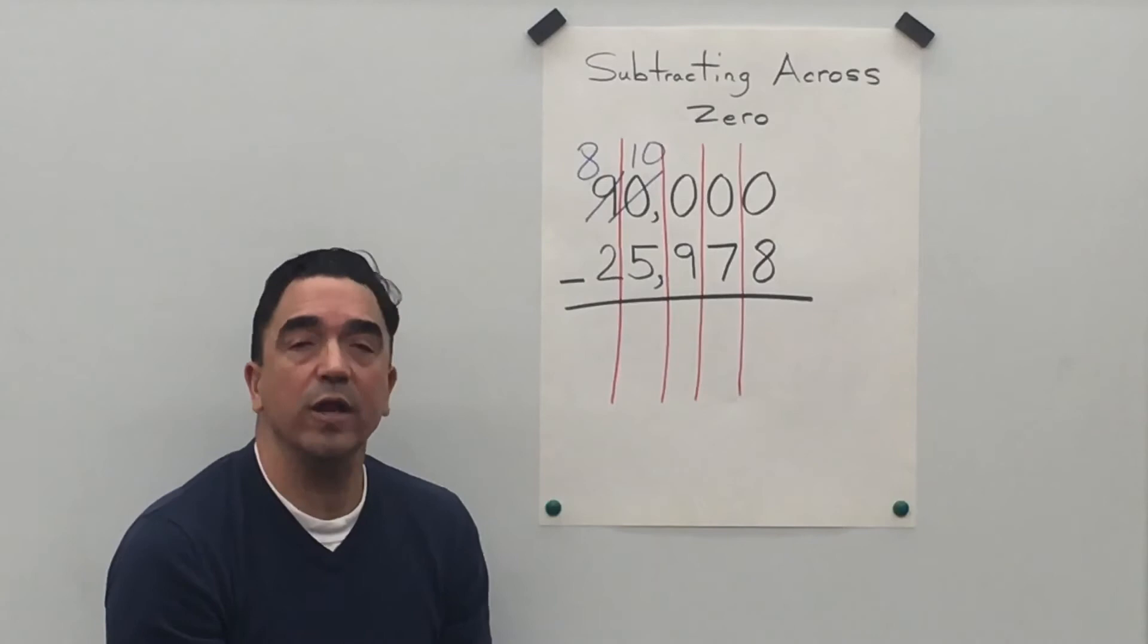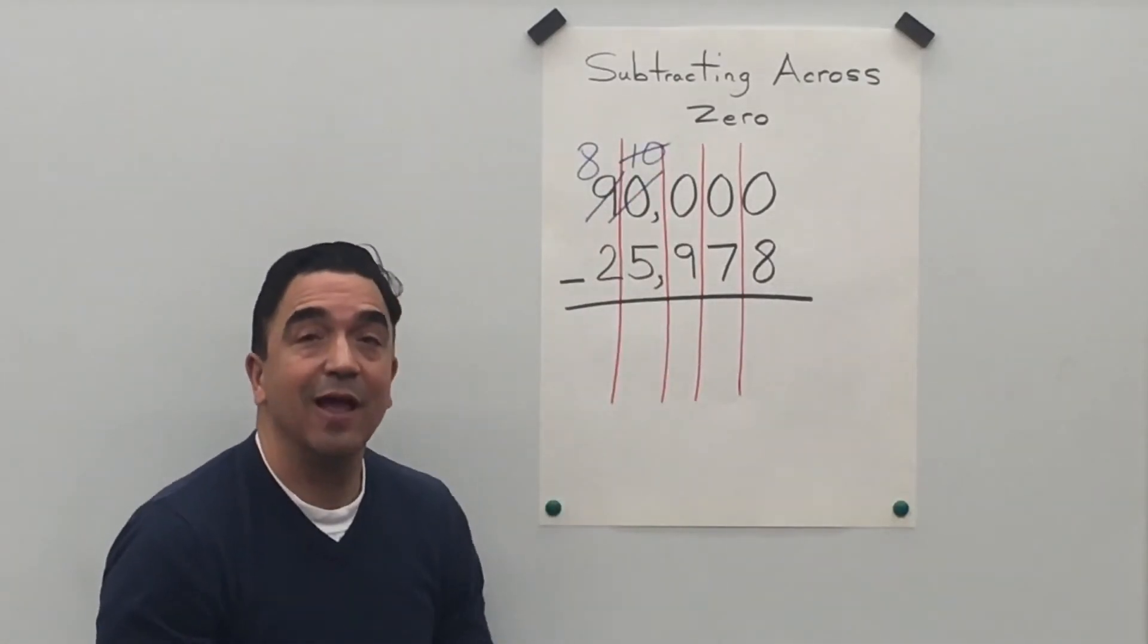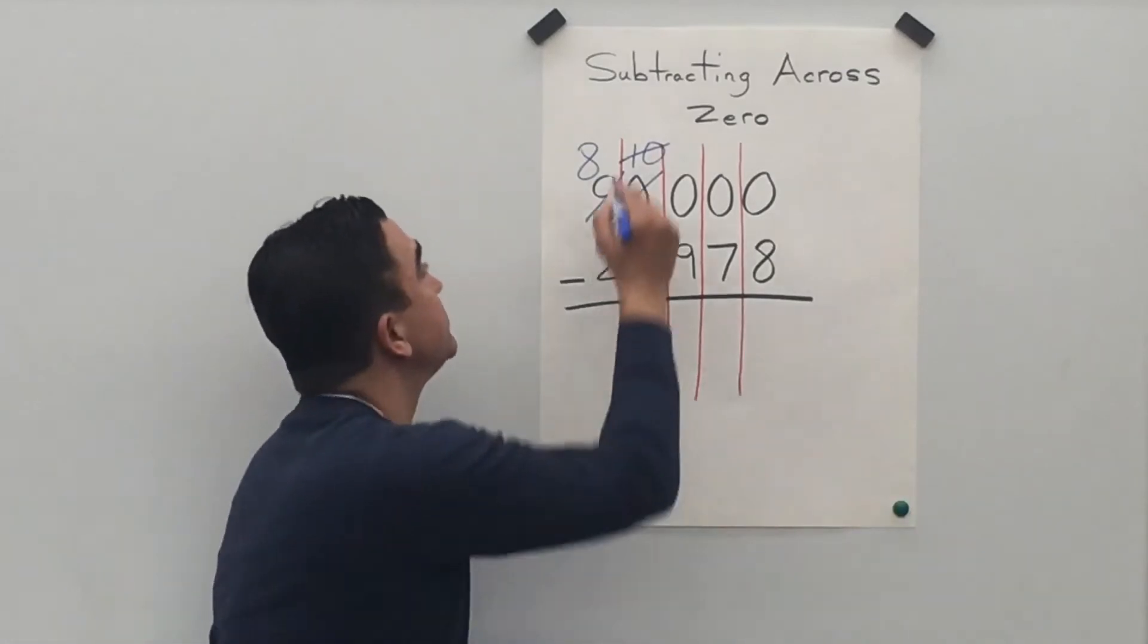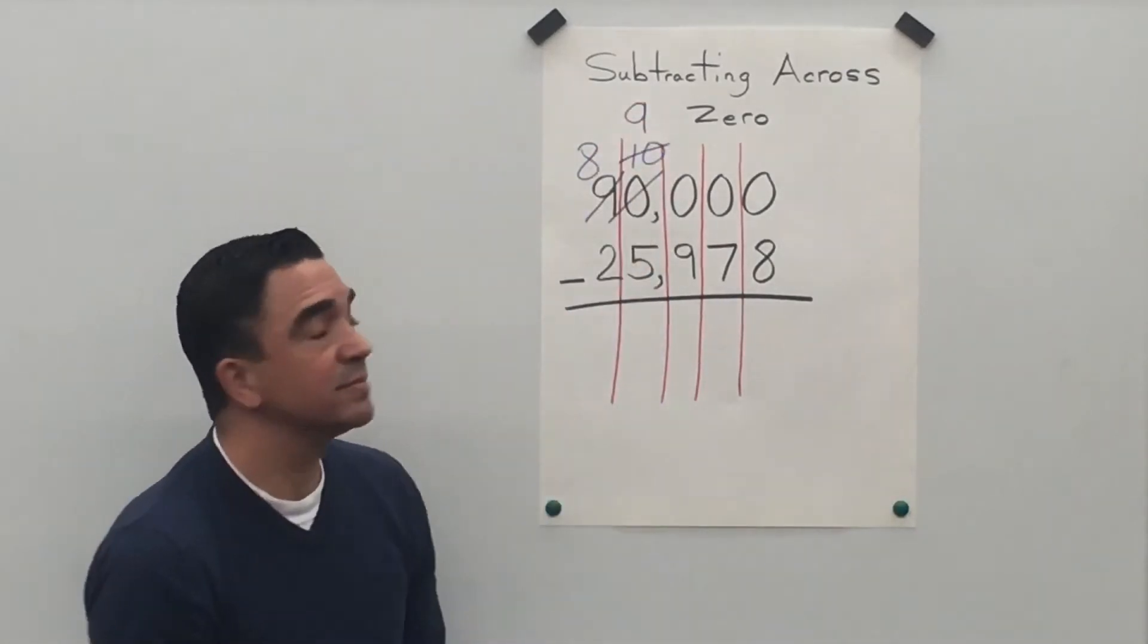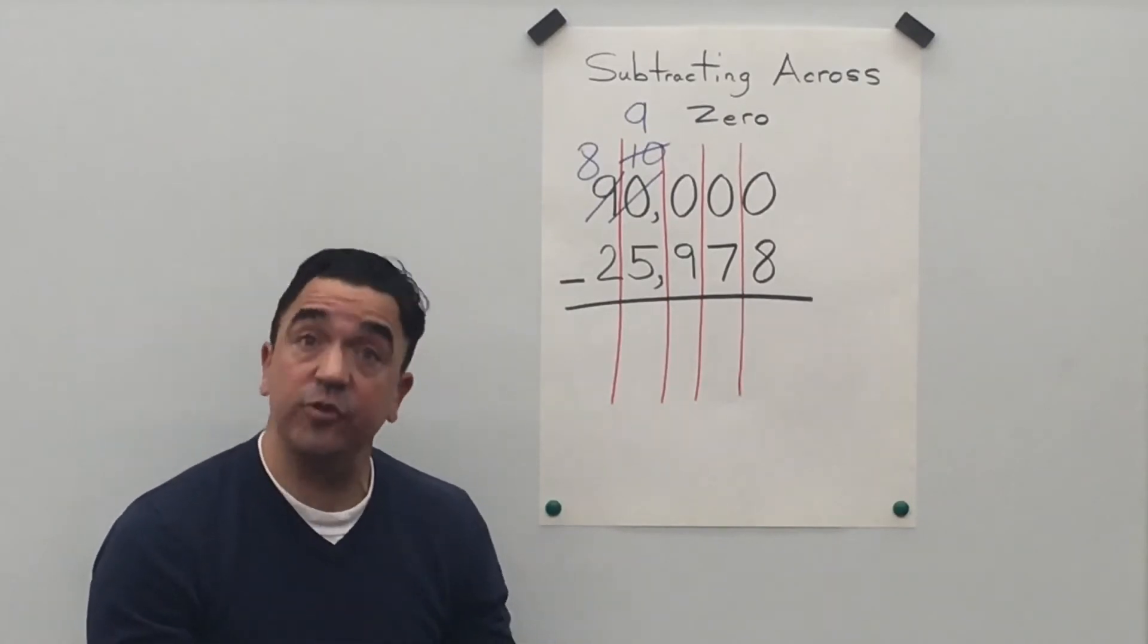We're going to take one away from that ten. It's going to become a nine. And we're going to change the zero in the hundreds place into a ten.